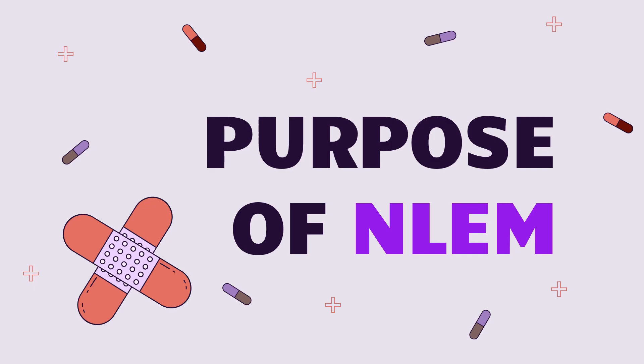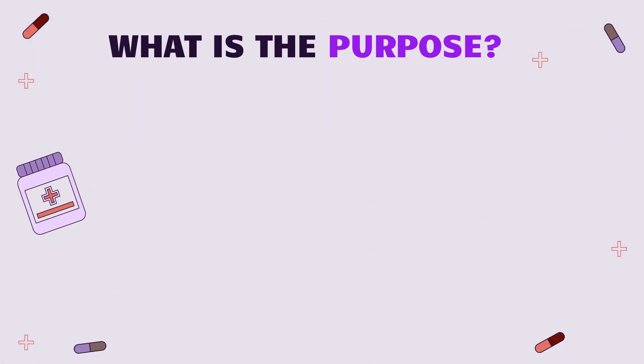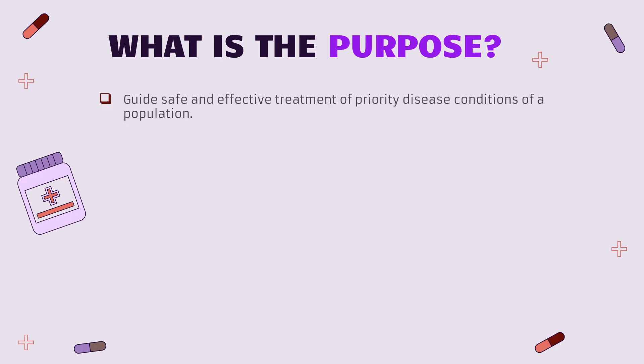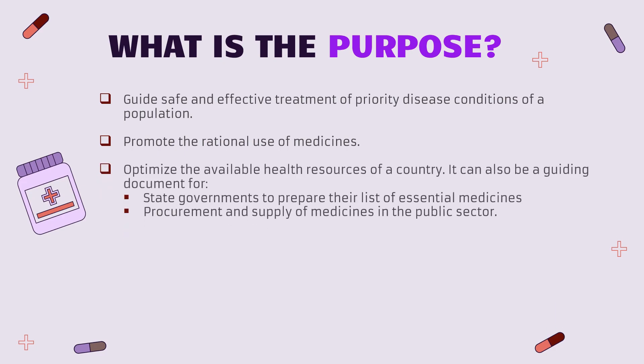Why exactly do we need a National List of Essential Medicines? The first purpose is to guide safe and effective treatment of priority disease conditions in the population — for example, during COVID prevalence, creating a list of medications ensuring safe and effective treatment. We also prepare this list to promote rational use of medicine so a large part of the population can afford medication at a particular price, and to optimize available health resources. If health resources are not shared with the larger population, a pandemic can go out of control. State governments also prepare lists of essential medicines and procure supplies from the public sector to provide to the masses.